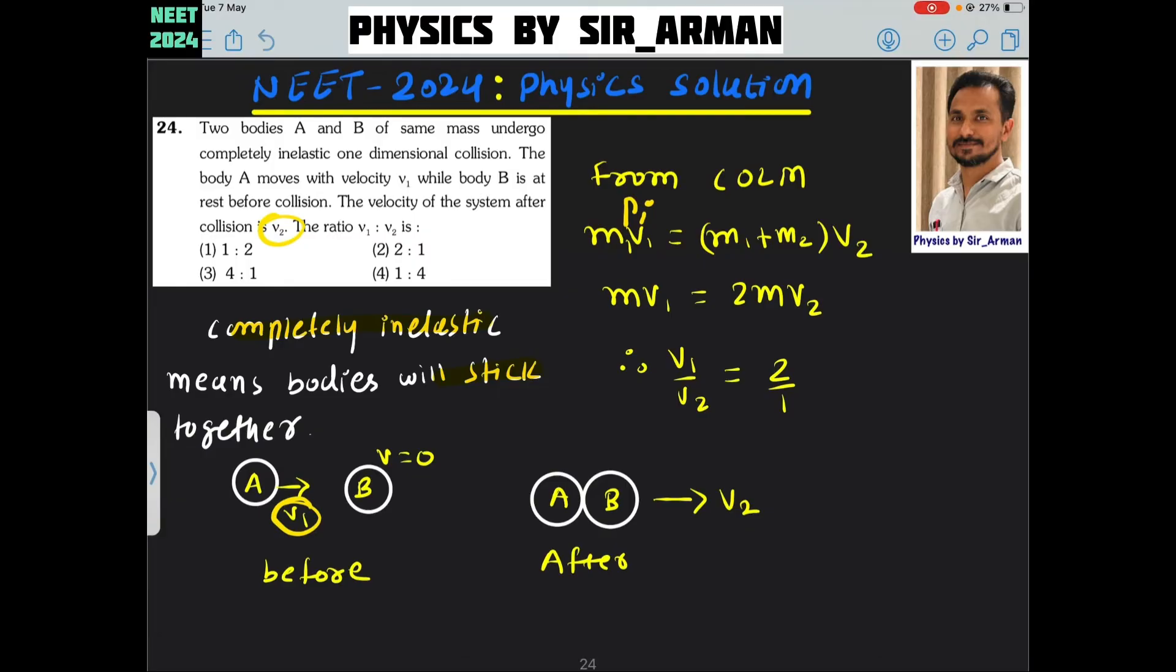Now, as both are identical, here M initial speed is V1, and this M plus M is 2M, and the final speed is V2. M and M will get cancelled. So the ratio V1 by V2 will become 2 is to 1.